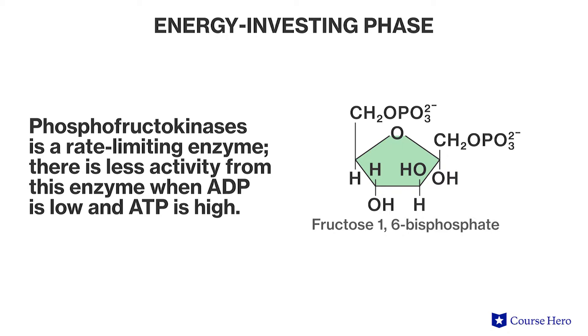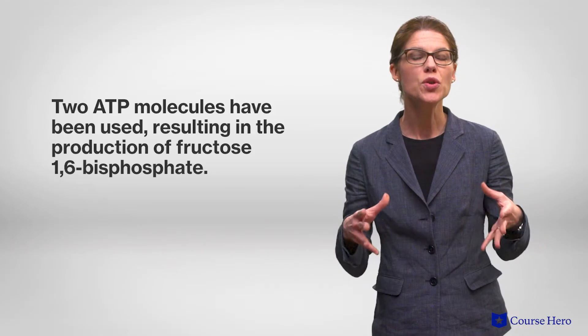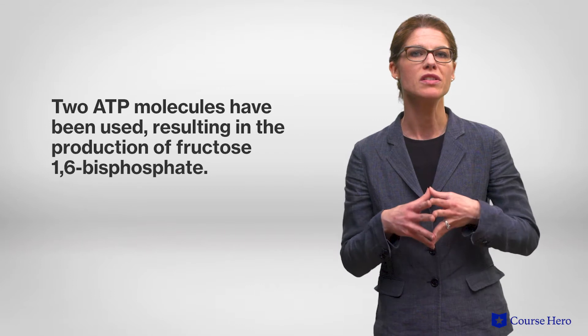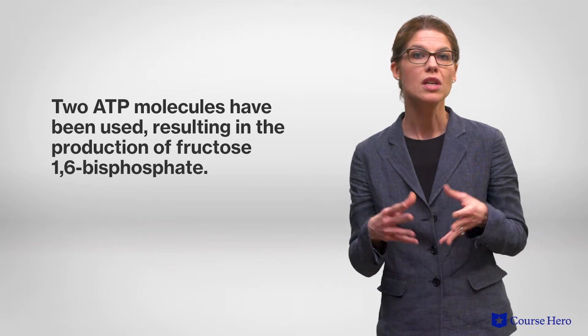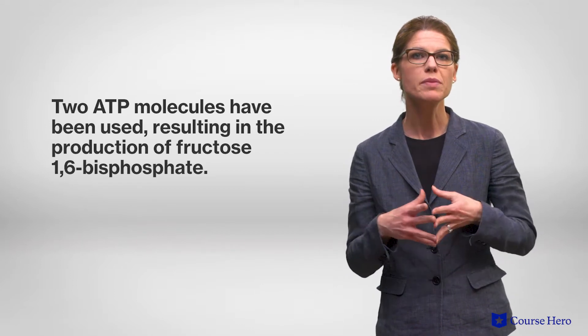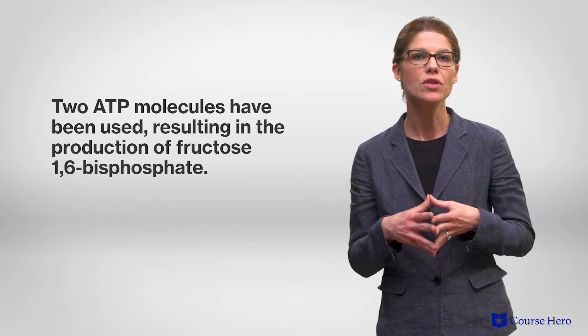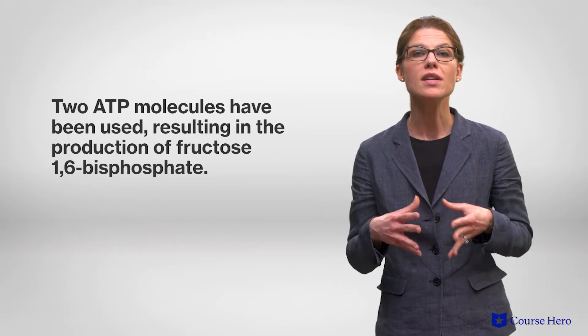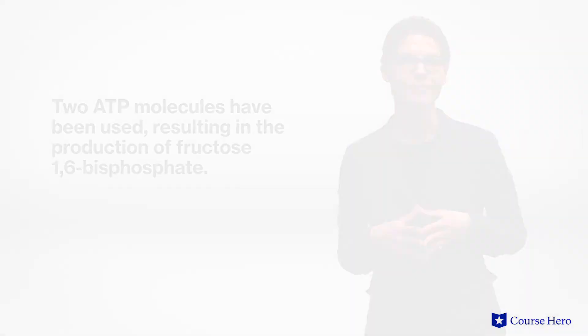In this way, when there's sufficient ATP in the system, this step of the pathway slows down. At this point along the glycolysis pathway, two ATP molecules have been used, resulting in the production of fructose 1,6-bisphosphate.